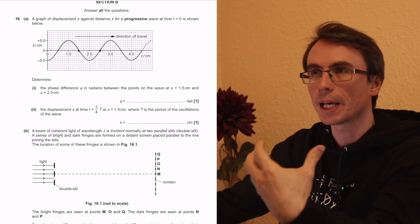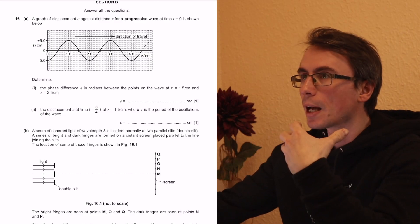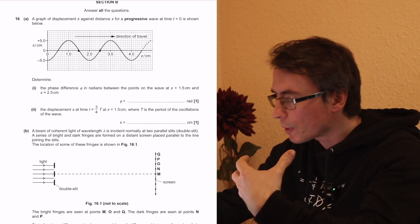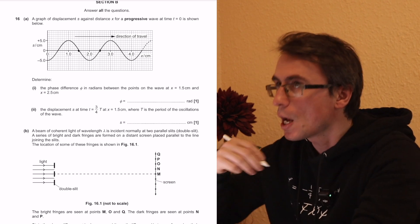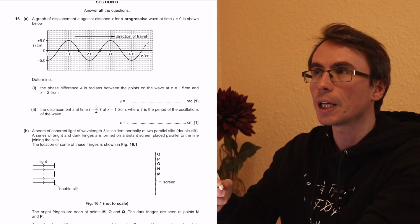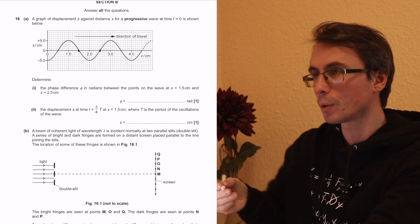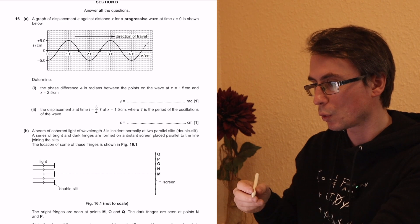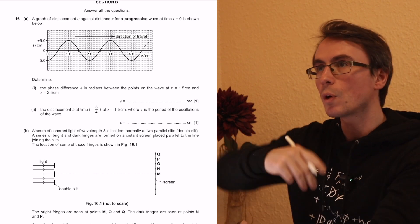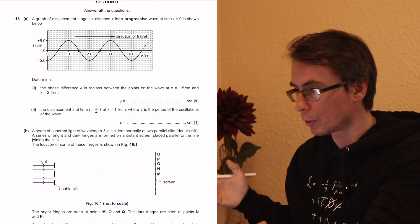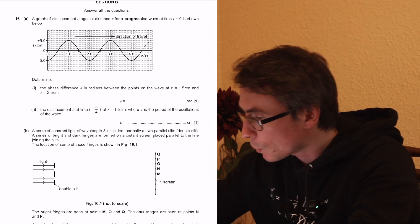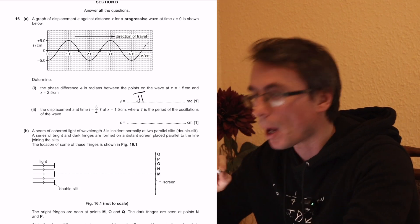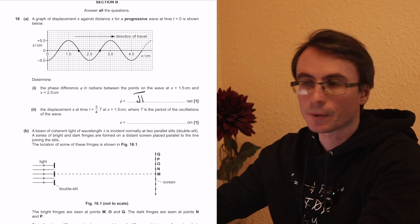They differ by half a wavelength, and we want to express our phase difference in radians. Half a wavelength corresponds to 180 degrees since one complete wave cycle is 360, so in radians, 180 is just π radians.